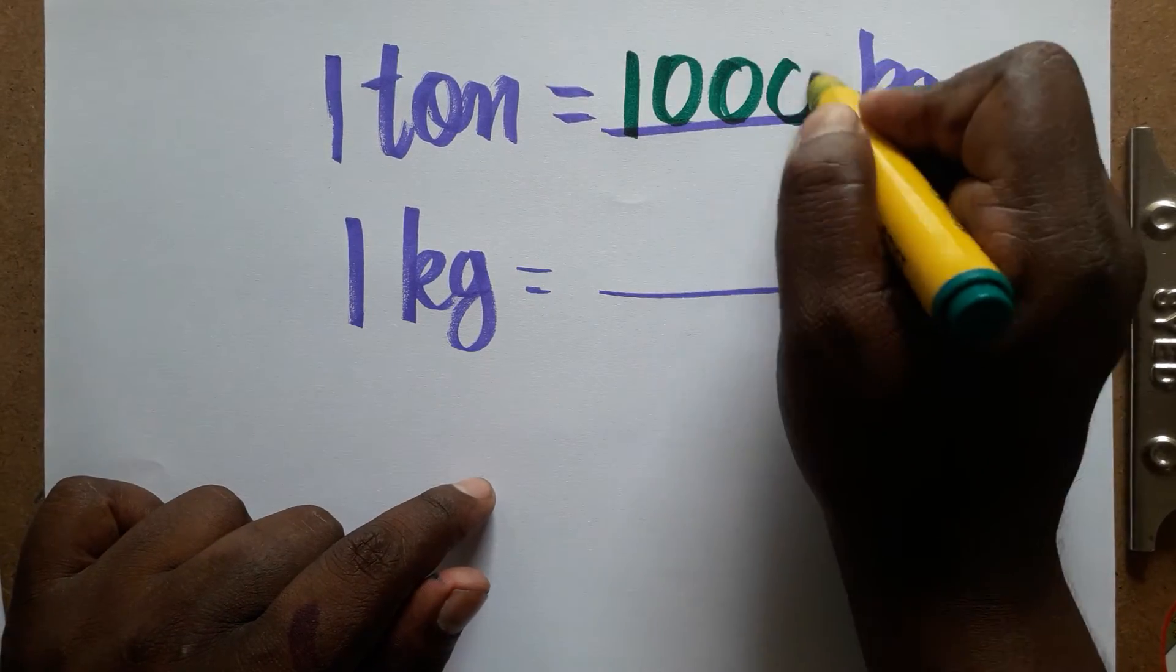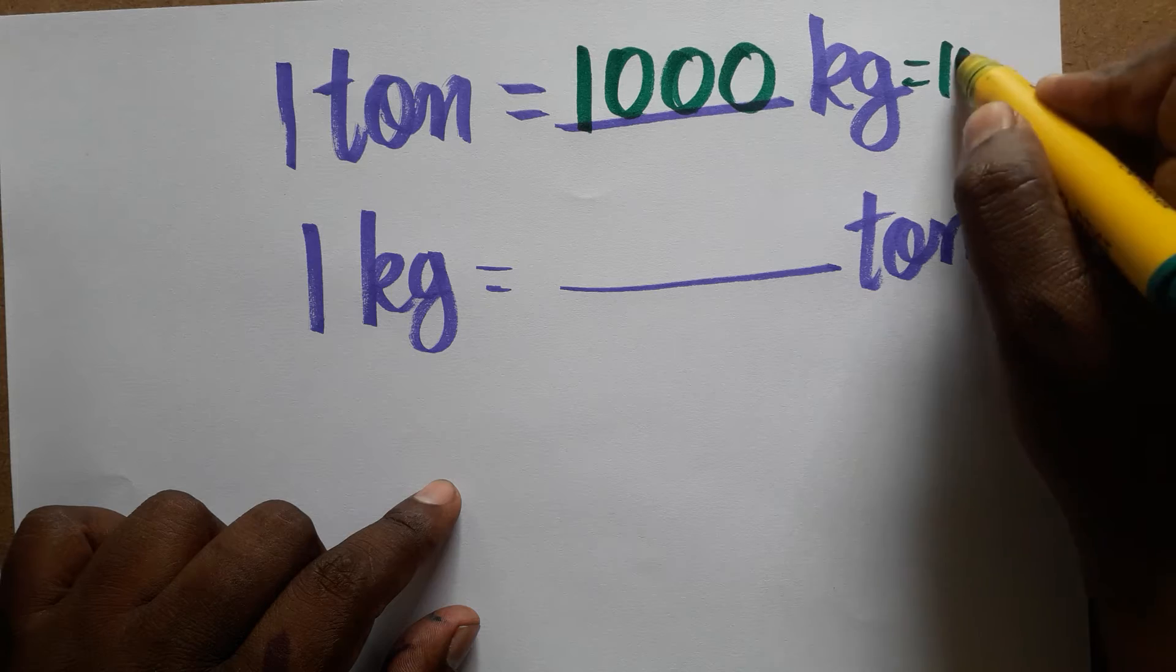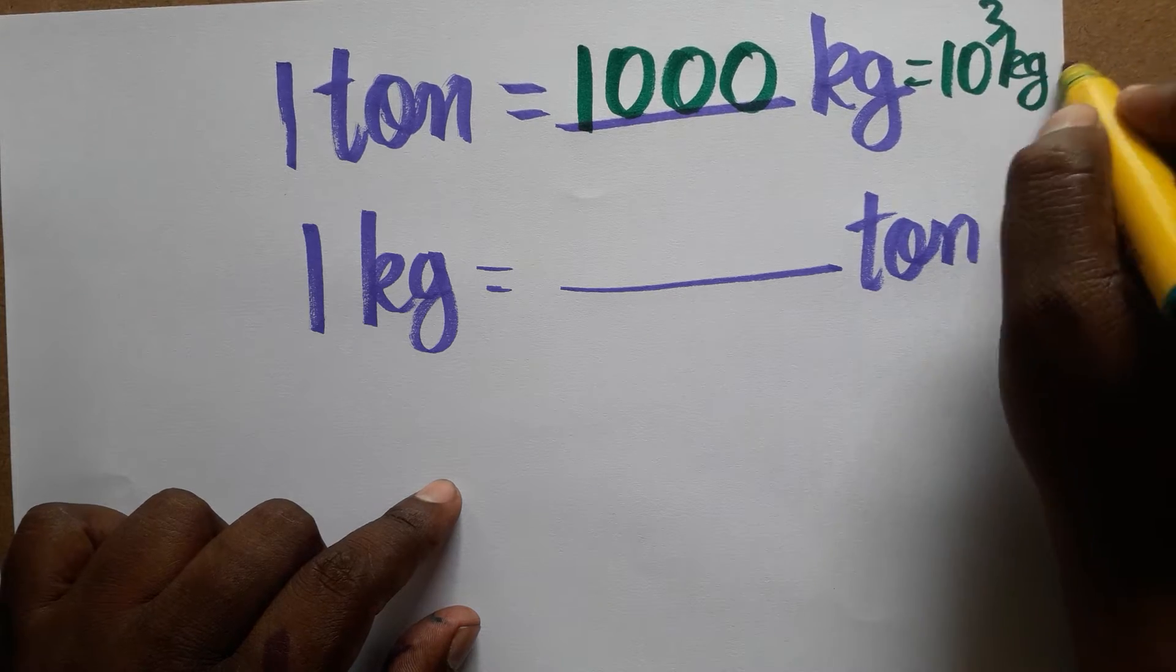Or we can write it as 10 power 3 kg. 1000 can be written as 10 power 3.